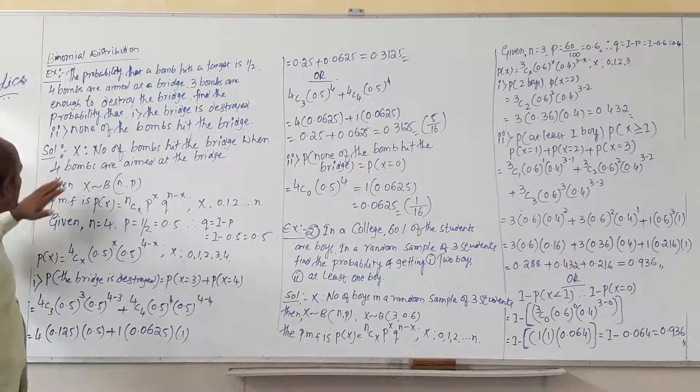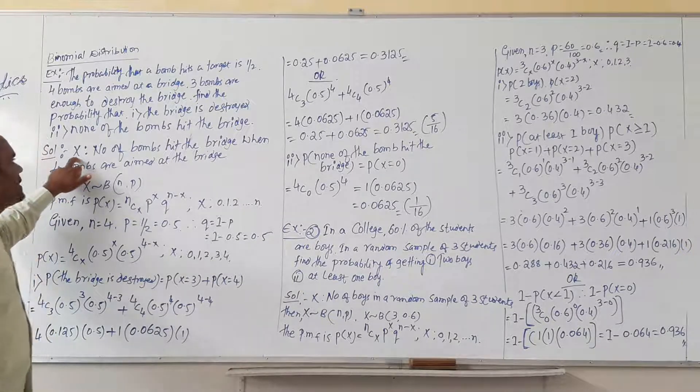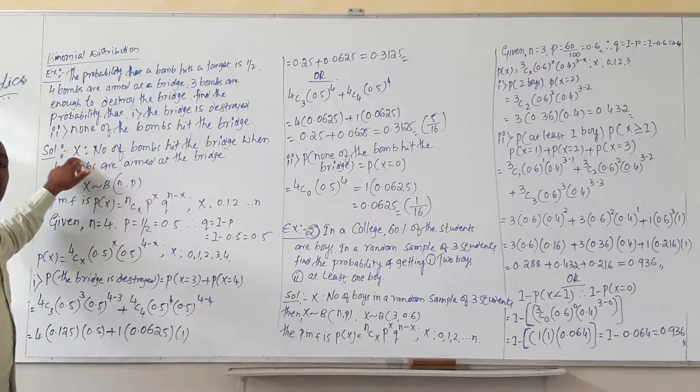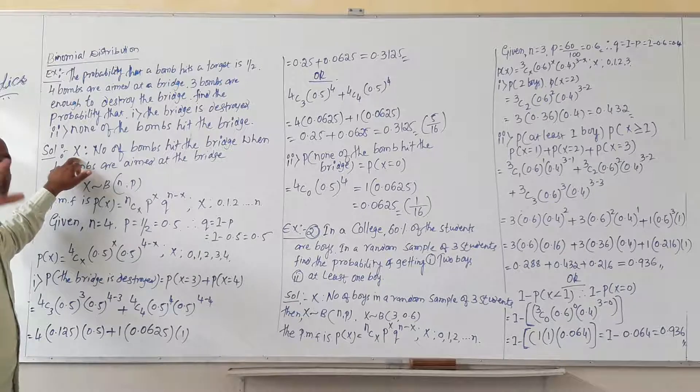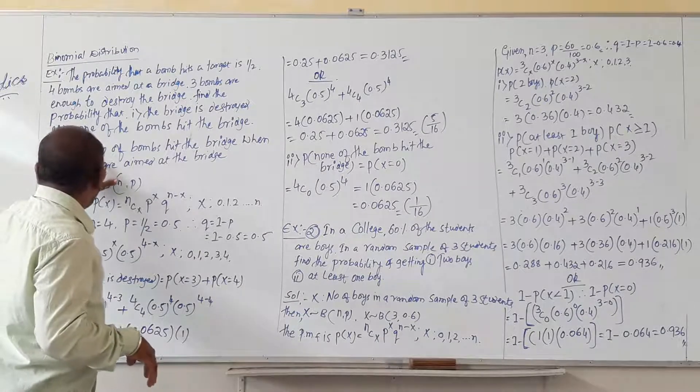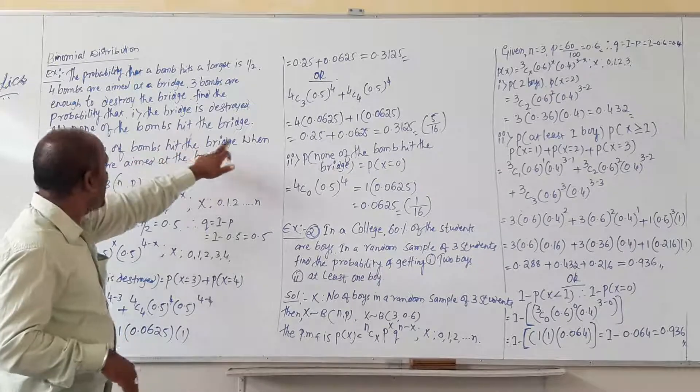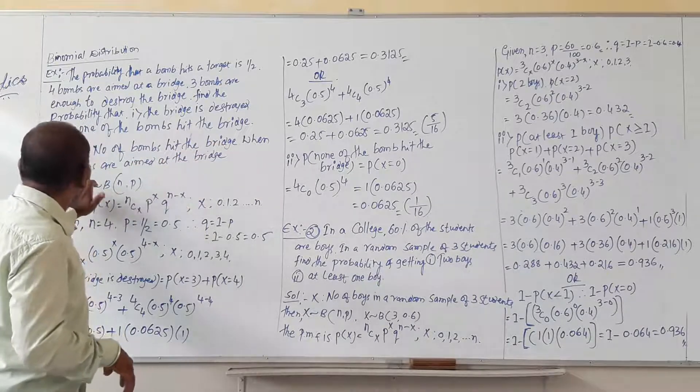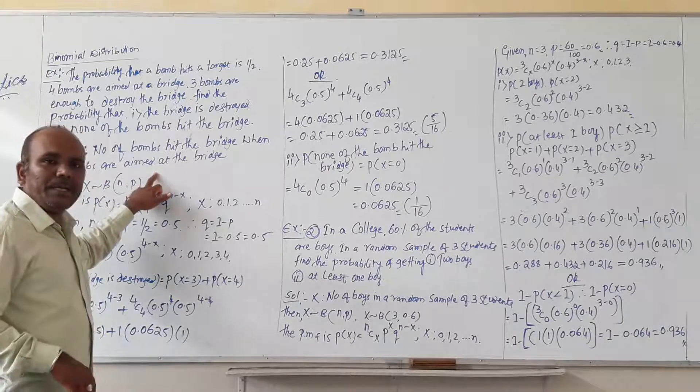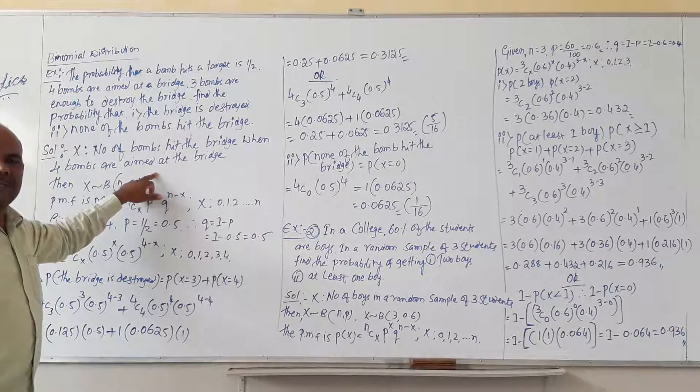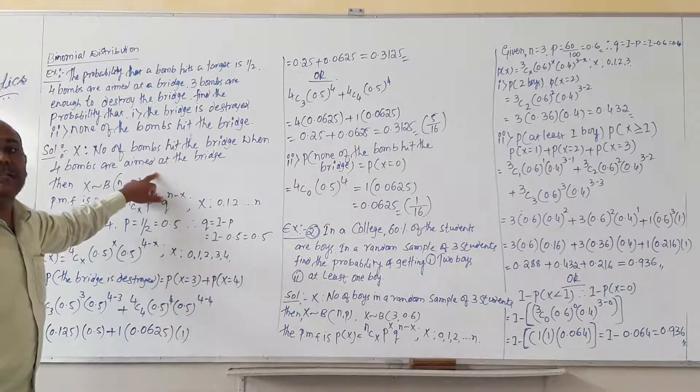So first let us determine what is next. It means when we take x value in the formula, then what it indicates. X means number of bombs hit the bridge when four bombs are aimed at the bridge. This is very very important. First we determine or first we describe what is x.